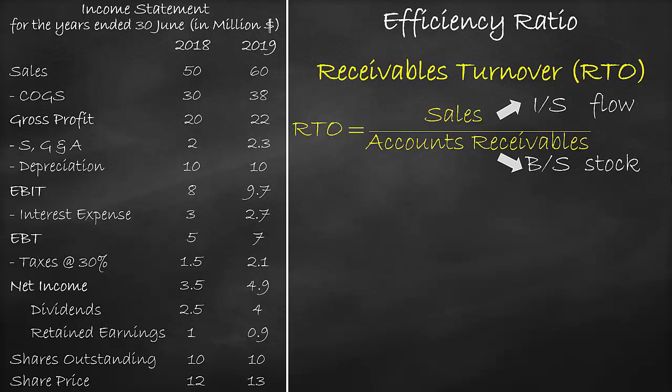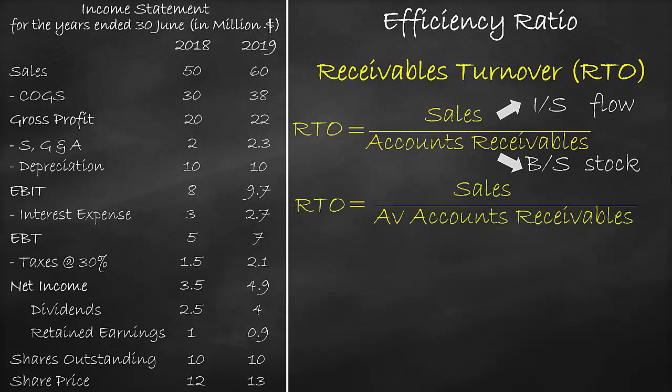In summary, any time we find a Financial Ratio that includes an item from the Income Statement and an item from the Balance Sheet, we will use the Income Statement item and get the average of the two Balance Sheet items. So we can rewrite the Receivables Turnover as Sales divided by Average Accounts Receivables.